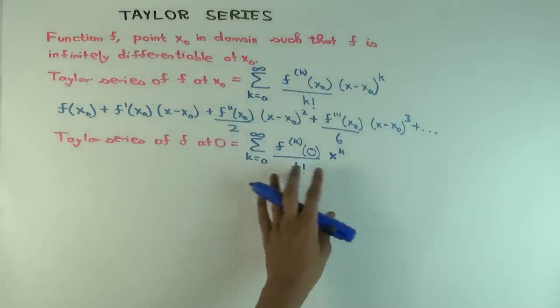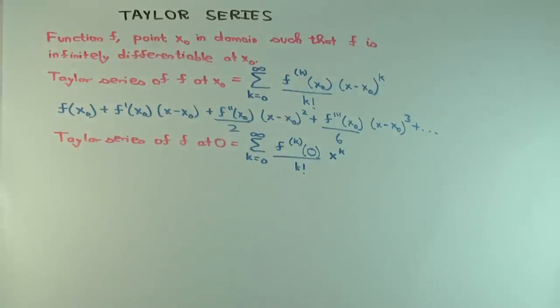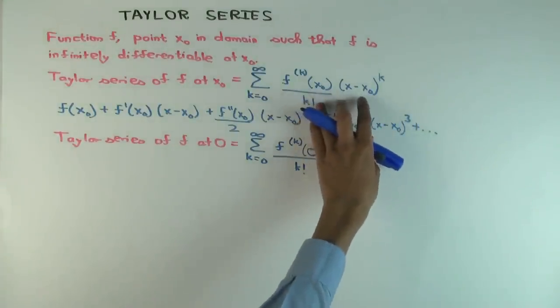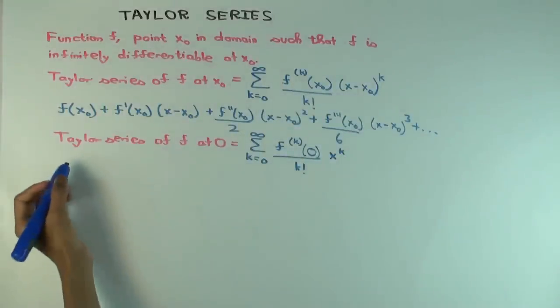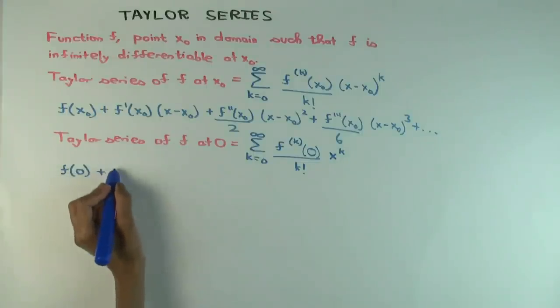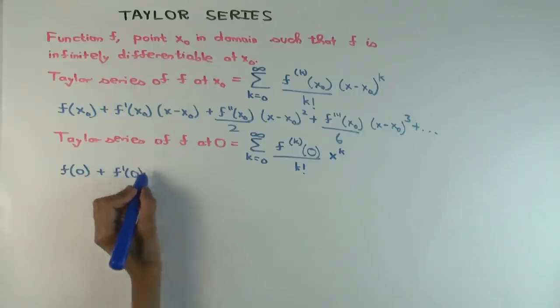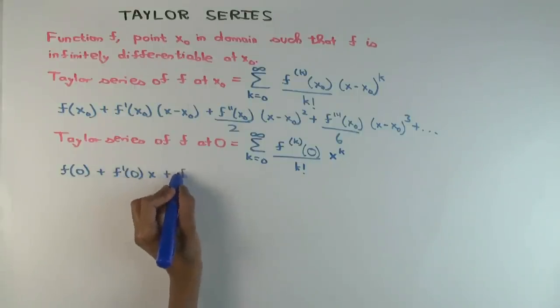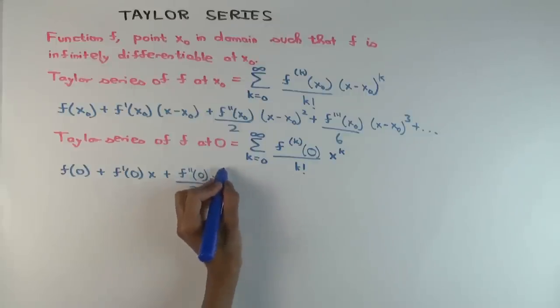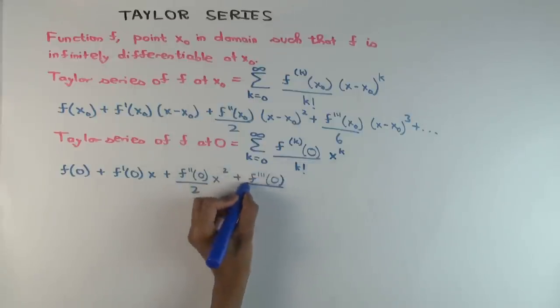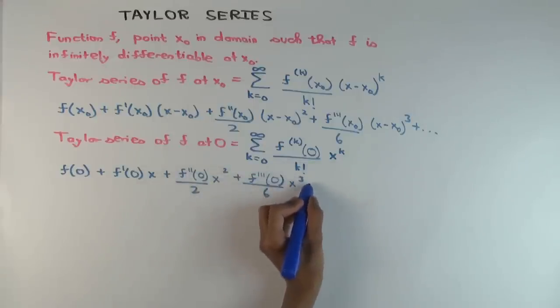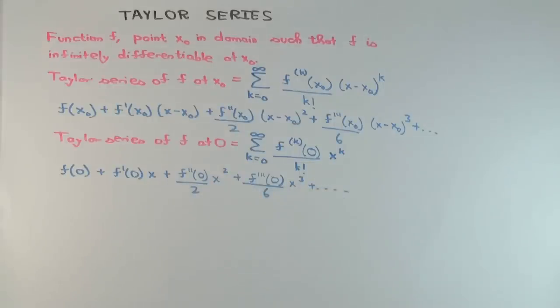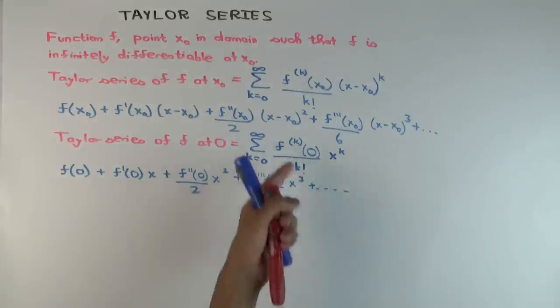Now the summation actually goes to infinity, so it's not quite a polynomial. It's a power series. This is a power series in x. The general equation is a power series in x minus x0. What are the first few terms here? f of 0 plus f prime 0 times x plus f double prime 0 over 2 times x squared plus f triple prime 0 over 6 times x cubed. So that's the definition of Taylor series at 0.